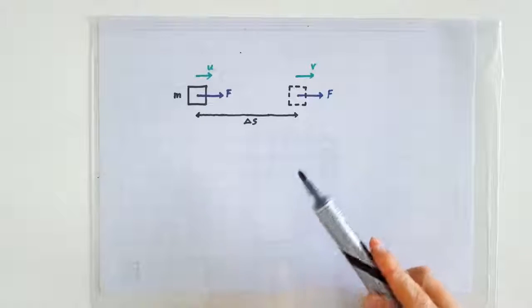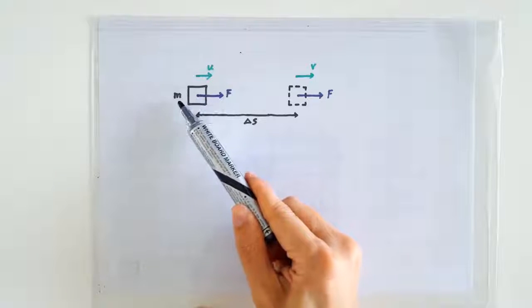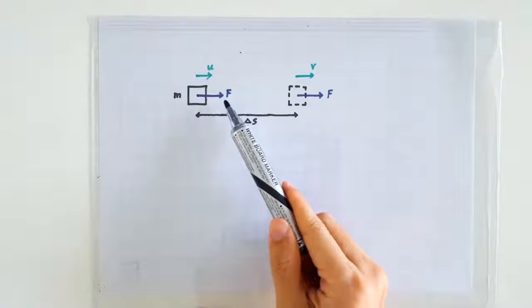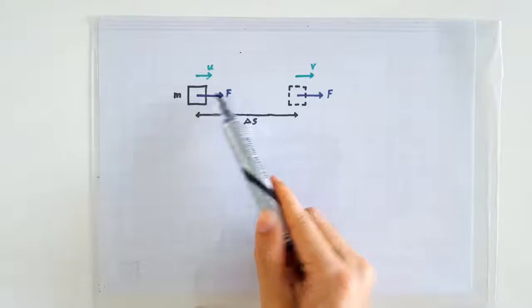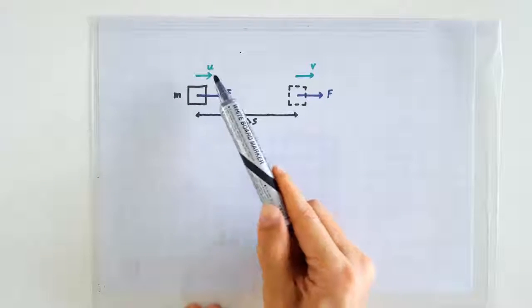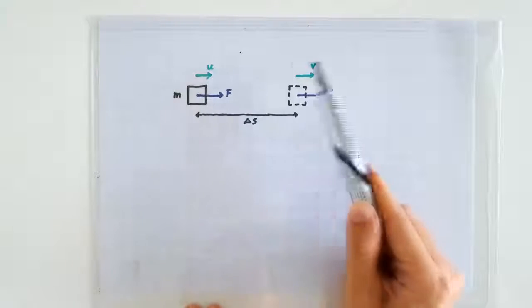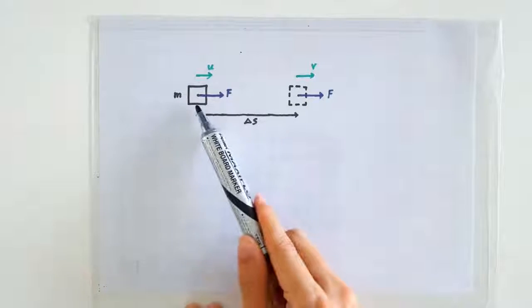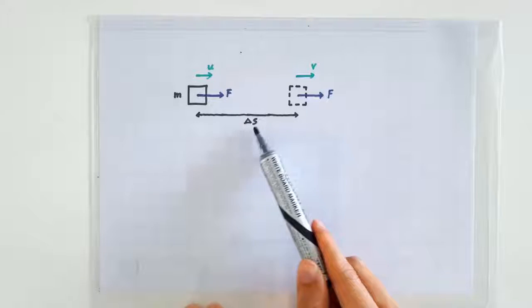To answer that question, let's consider a mass m being pushed along by a constant force F. And because of this force, the speed of the mass changed from u to v after traveling a distance of delta s.